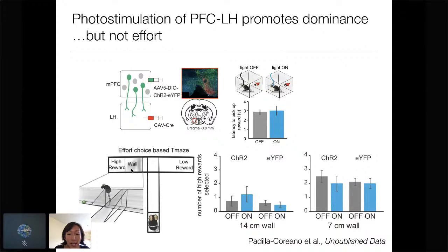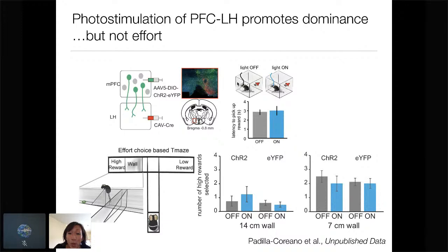We also know the prefrontal cortex is important for effort — there are beautiful papers on the role of PFC in effort. We wanted to make sure that wasn't what we were seeing — maybe animals were just more willing to exert effort in general, including dominance behaviors and pushing for the port. We used an effort-choice-based task and found really nothing: regardless of whether there was a large wall or a small wall, photo stimulation doesn't increase willingness to exert effort as measured by wall climbing. We also don't see any change in latency to pick up rewards when animals are alone during photo stimulation. So as far as we can tell, this does seem specific to dominance behaviors.